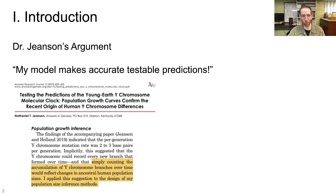It's this little piece right here where he's talking about population growth inferences from rooted Y chromosome phylogenetic trees, so evolutionary trees of the human Y chromosome that have a root that indicates the most recent common ancestor of all extant Y chromosomes at some point in the past. He writes, simply counting the accumulation of Y chromosome branches over time would reflect changes in ancestral human population size. I applied this suggestion to the design of my population size inference methods.